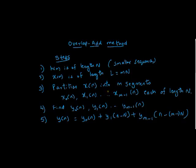Now we have understood why we have to use the overlap method to find convolution of two sequences. We usually encounter these methods when one sequence is much much larger than the other sequence. We don't want memory to be wasted — we don't want much memory to be used to perform a simple convolution. This overlap-add method will ensure that memory utilization is very less compared to the usual convolution process.